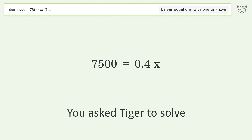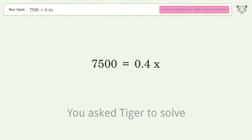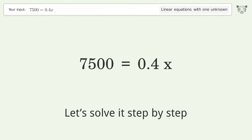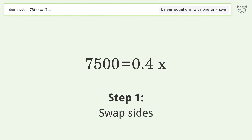Tiger is asked to solve a linear equation with one unknown. The equation is 7500 = 0.4*x. Let's solve it step by step. First, swap sides to get 0.4*x = 7500.